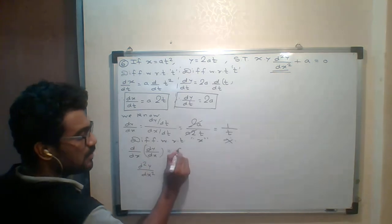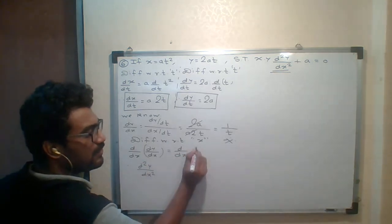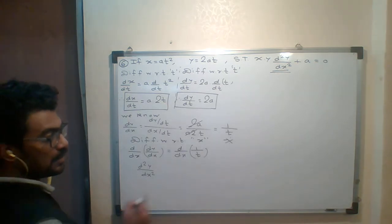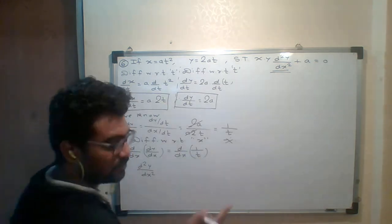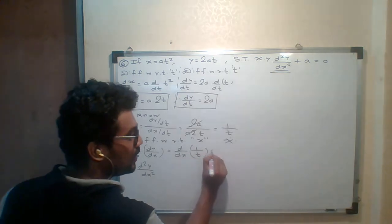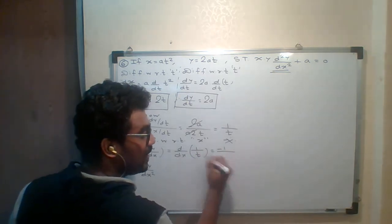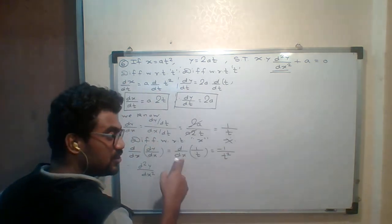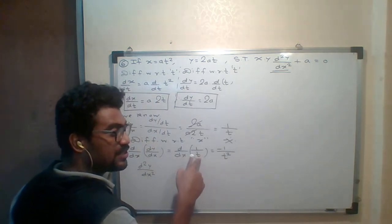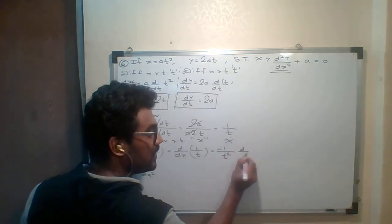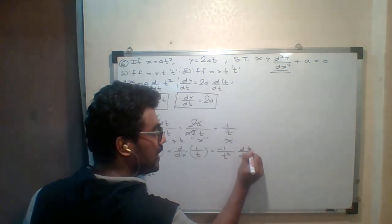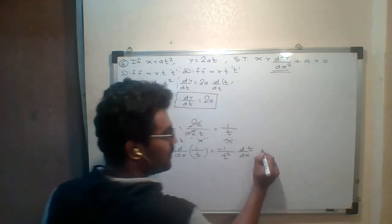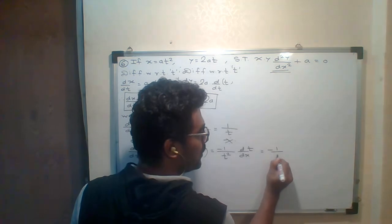Now, differentiating 1/t with respect to x — this is the same as 1/u. The derivative of 1/x is −1/x². So here, differentiating with respect to x, the function is t, and applying the chain rule gives minus 1/t² times dt/dx.